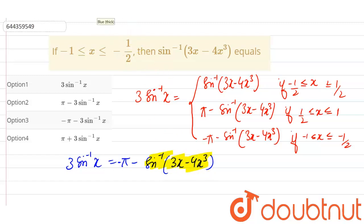So taking to another side we get sine inverse 3x minus 4x cube is equal to minus pi minus 3 sine inverse x. Right, so this is our final answer, which is given in option number C. So option number C is our correct answer.